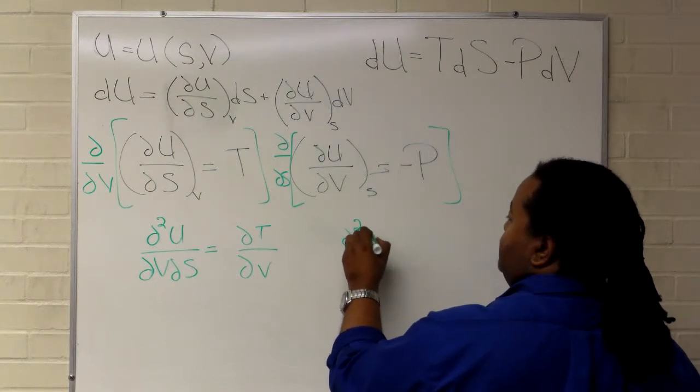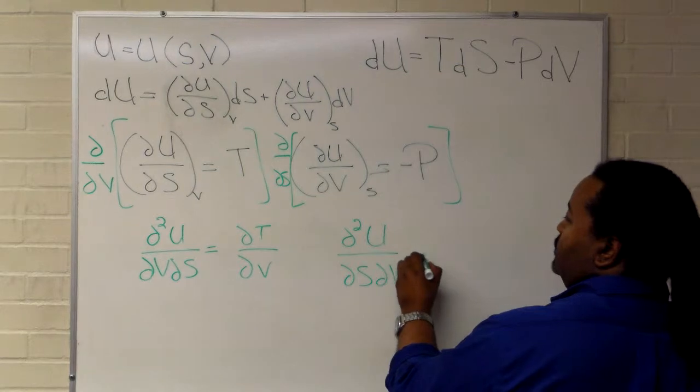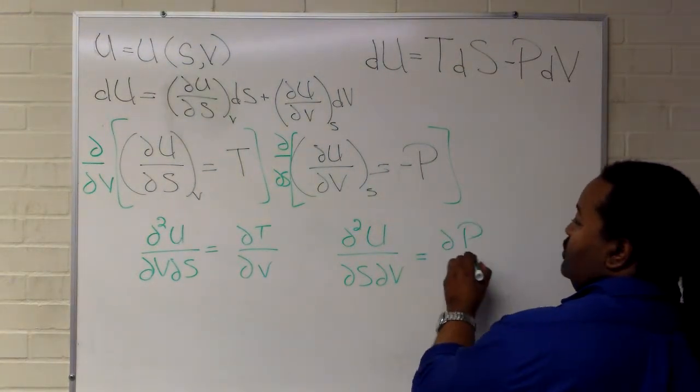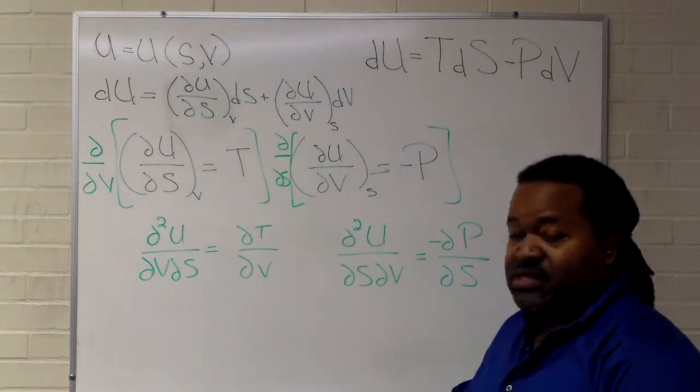And here, second mixed partial, partial s partial v, is going to be partial p partial s with the appropriate sign.